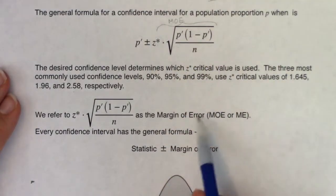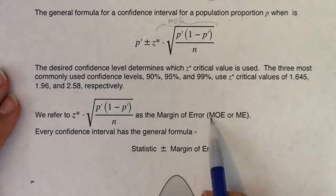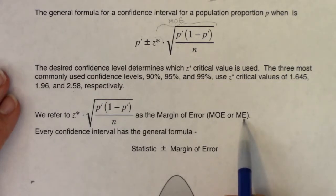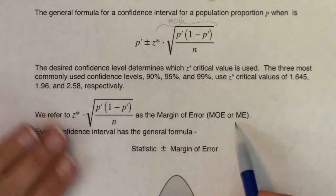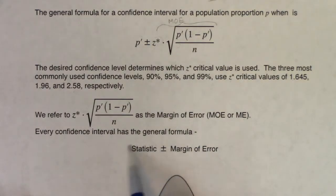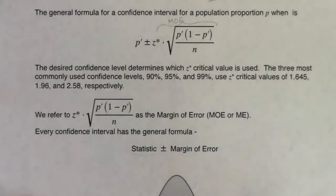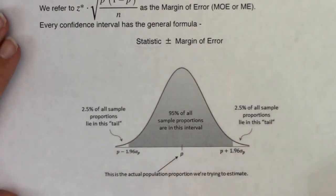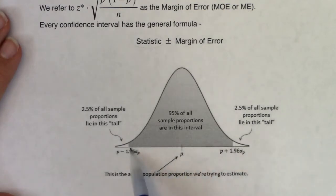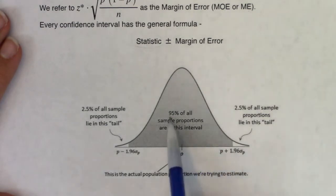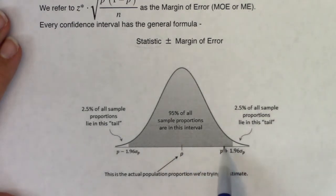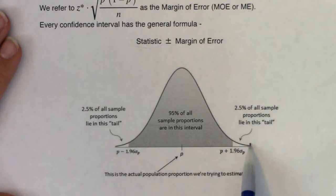The margin of error is often written as MOE or ME — both are interchangeable. Every confidence interval has the same setup: take a statistic from your sample, a point estimate, and add and subtract a margin of error. Graphically, we start with the statistic and extend by the margin of error in both directions. 95% of all sample proportions fall inside this interval, with 2.5% in each tail.